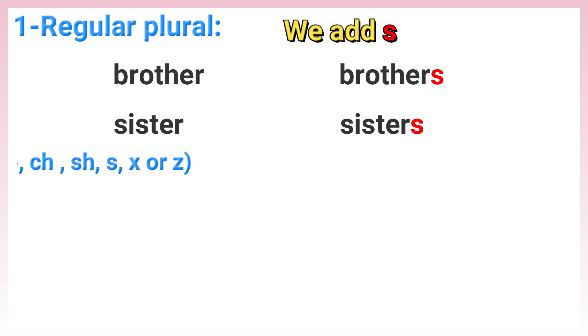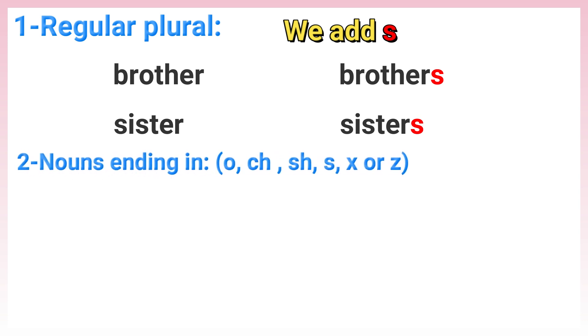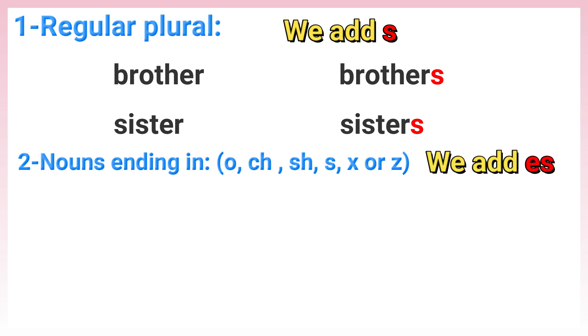Rule 2: Nouns ending in O, CH, SH, S, X, or Z — we add ES.